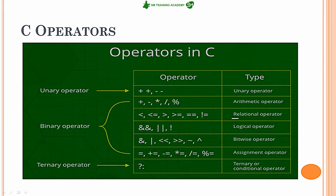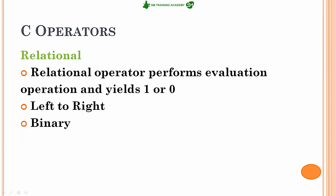Relational operators are binary type operators, so they come under the binary category and require two different operands for proper operation. Relational operators perform evaluation and yield a result of either 0 or 1 — that is, high or low, true or false. These are the two possible results for a relational operator.